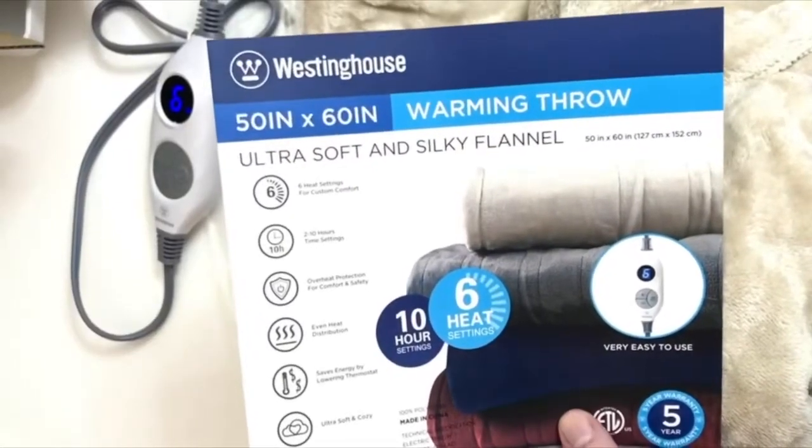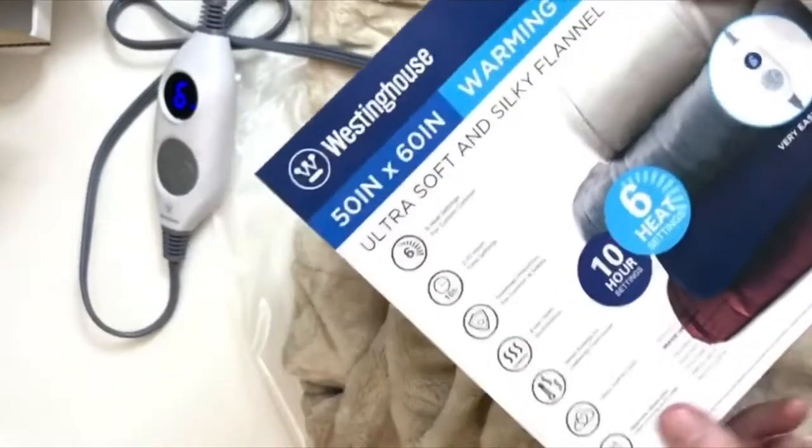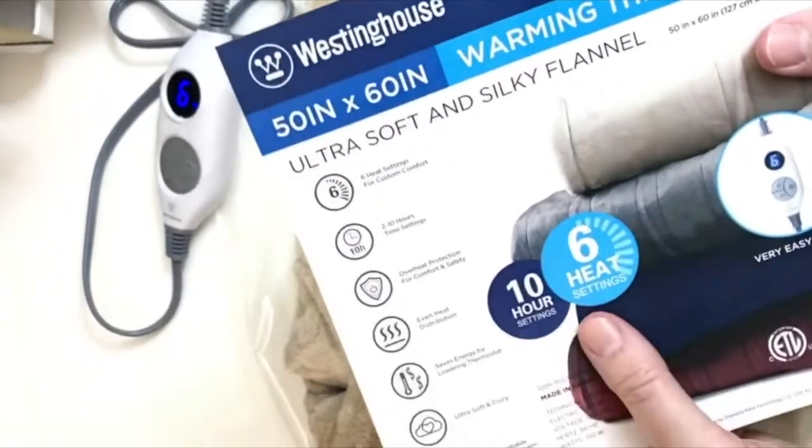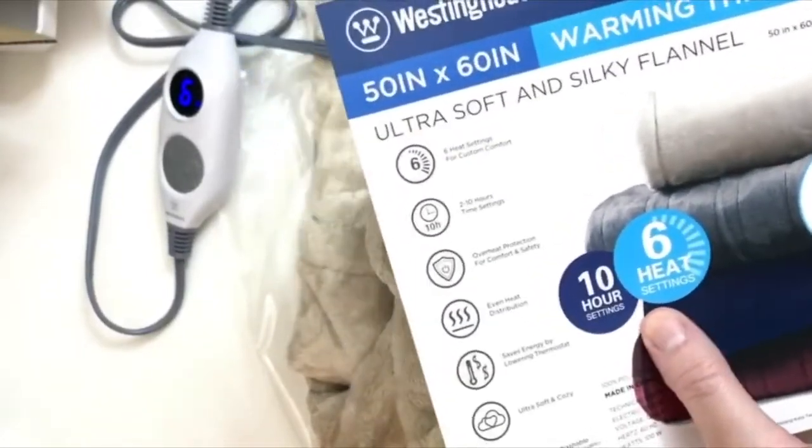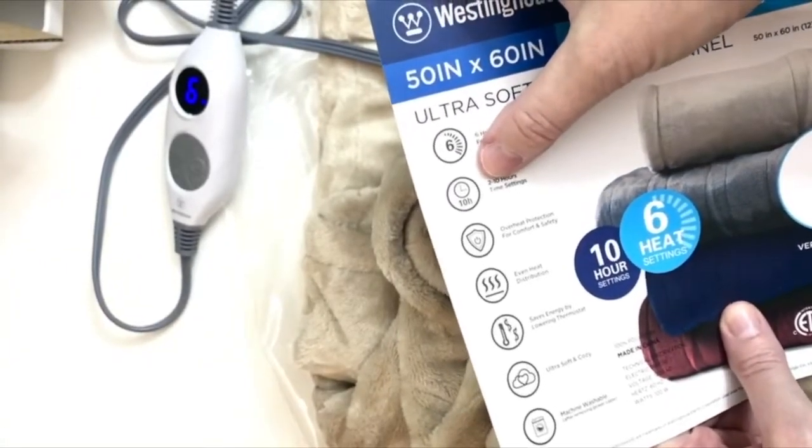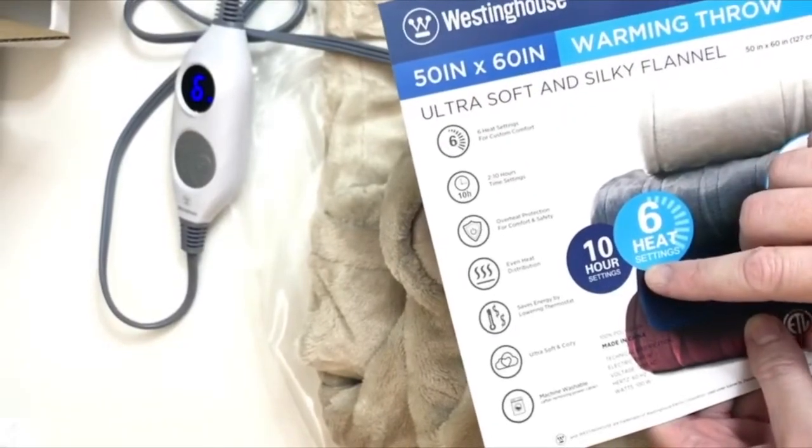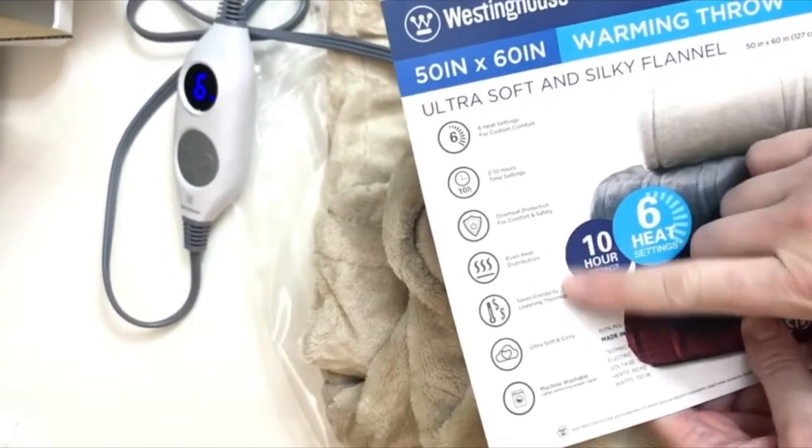This is the Westinghouse 50 inch by 60 inch throw. I've got the tan color. I'll show you the settings, but right here it says it's got six heat settings between two and ten hour time settings, which is nice. Even heat distribution.